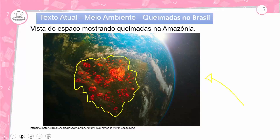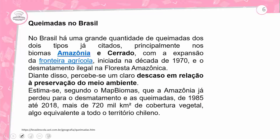Esta é uma imagem vista do espaço mostrando queimadas na Amazônia. No Brasil há uma grande quantidade de queimadas, principalmente nos biomas Amazônia e Cerrado. Com a expansão da fronteira agrícola iniciada na década de 1970 e o desmatamento ilegal na floresta amazônica, percebe-se um claro descaso em relação à preservação do meio ambiente. Estima-se, segundo o MapBiomas, que a Amazônia já perdeu mais de 720 mil quilômetros quadrados de cobertura vegetal de 1985 até 2018, algo equivalente a todo o território chileno.